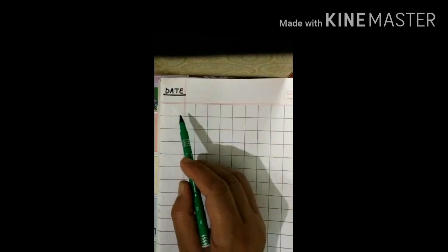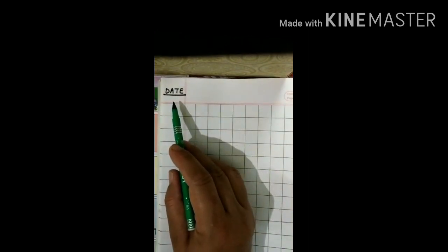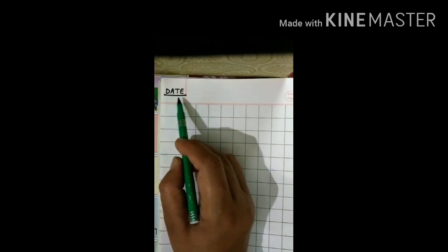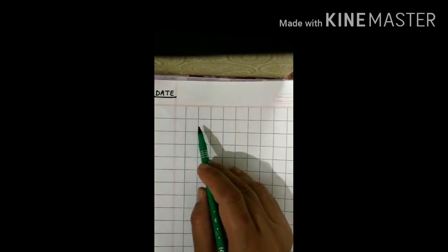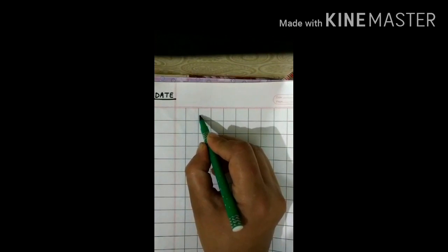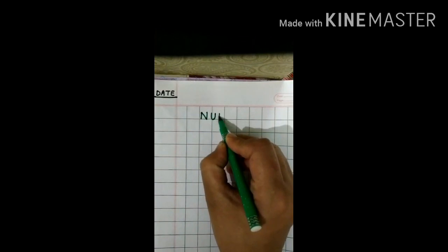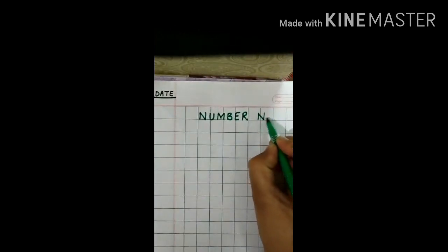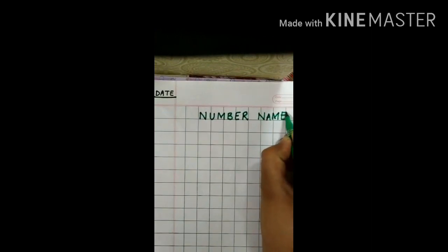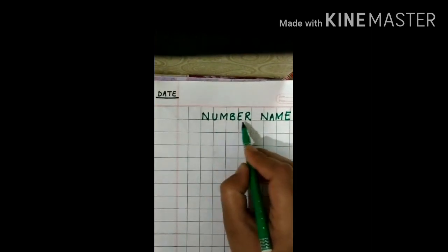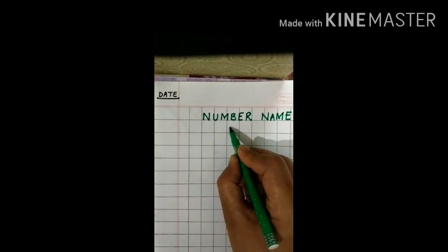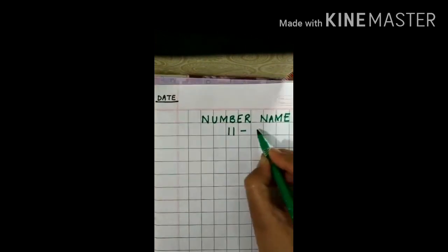Children, now we will do our written work in our maths copies. Are you ready with your notebook and pencil? First of all, you have to write the date. On whichever day you do the work, write that date only. Here you will write C-W. Then in this line you will write the topic: Number Name. Today we will do number 11 to 15.